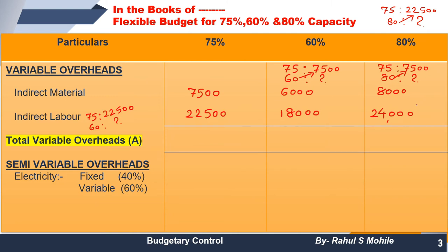Variable overheads increase per unit, so we solve per unit by cross multiplication. Using the given information of 7,500 and 22,500, if you add indirect material and indirect labor you get total variable overheads: 30,000 at one capacity level, 32,000 at another. This total is denoted as alphabet A.